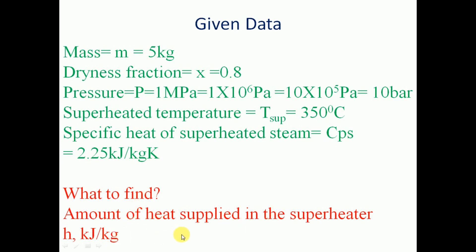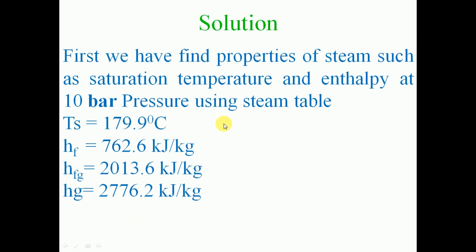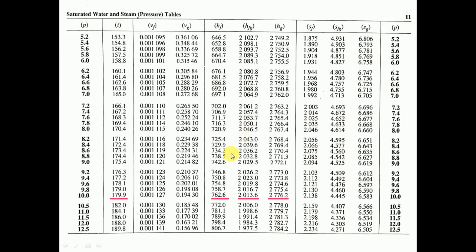To solve this problem, we first need to find the properties of steam — specifically the saturation temperature and enthalpy at 10 bar pressure — using the steam table. Here we look at the steam table for a pressure-based entry, where the pressure ranges from 5.2 bar to 12.5 bar, and we locate the row at 10 bar.